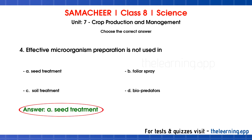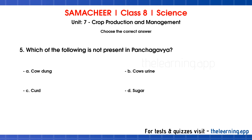Fifth question: which of the following is not present in Pancha Kavya? Options are A. cow dung, B. cow's urine, C. curd, D. sugar. The correct answer is option D, sugar. Pancha Kavya uses cow products — cow dung, urine, curd, and milk — but not sugar.